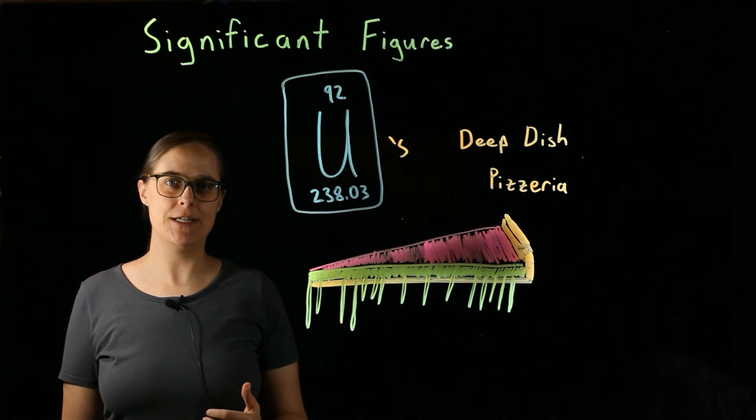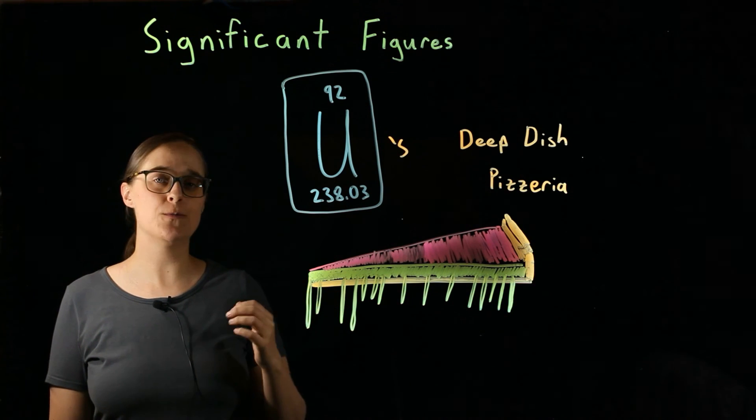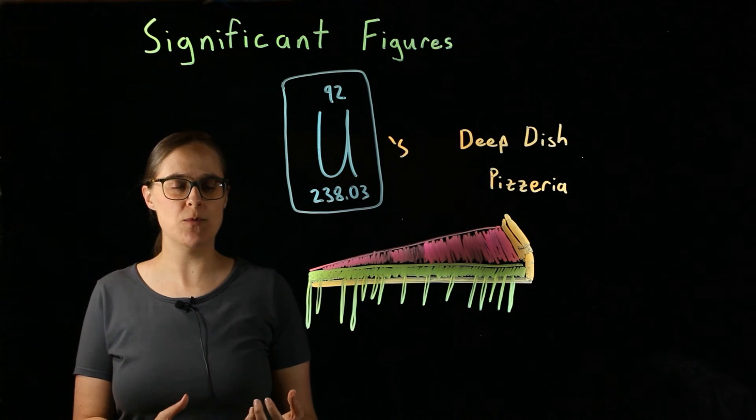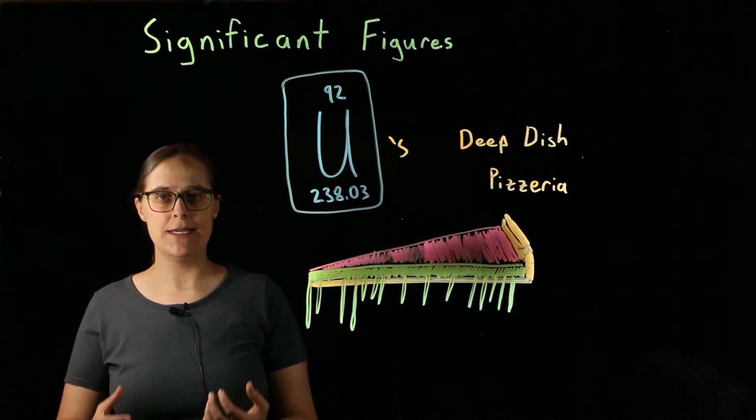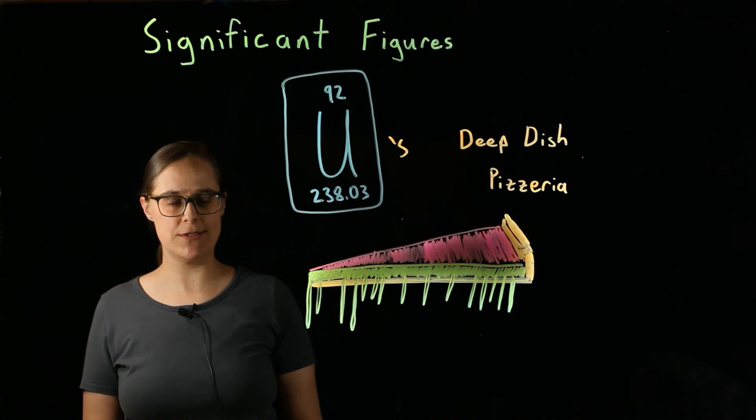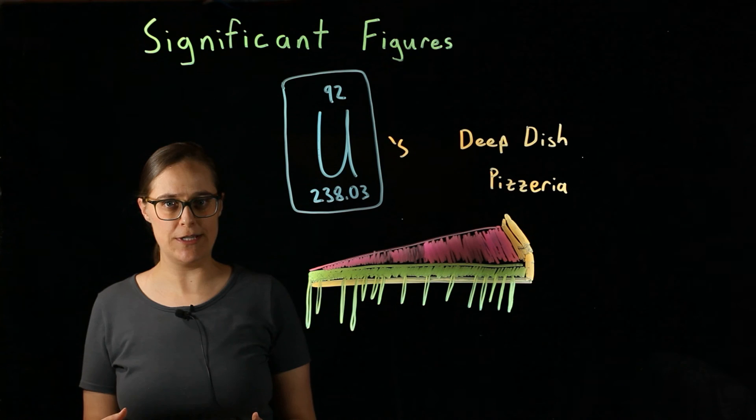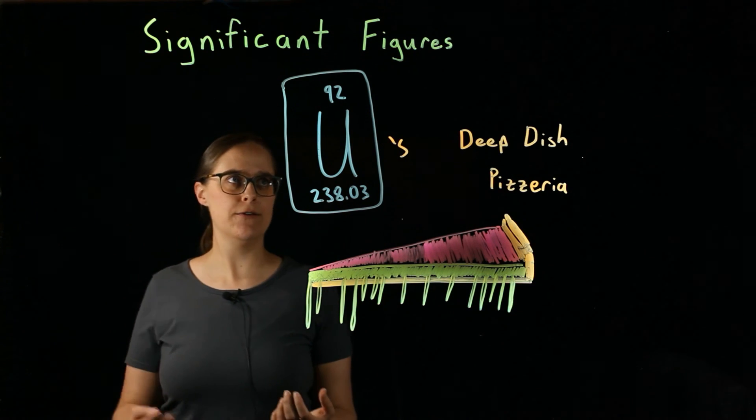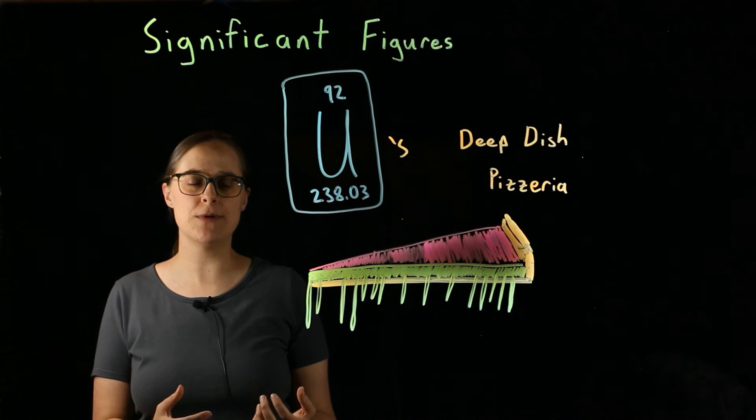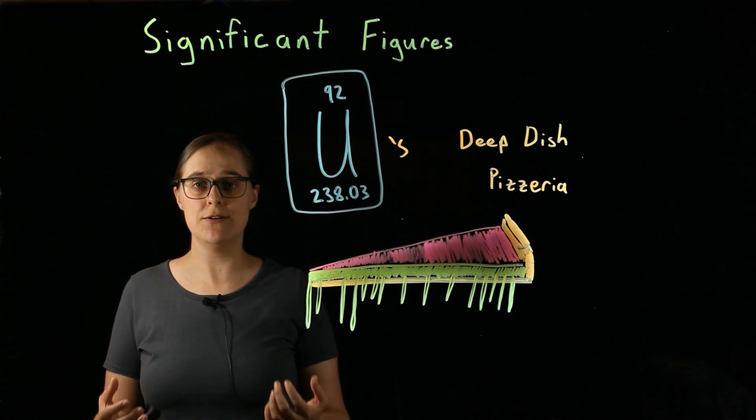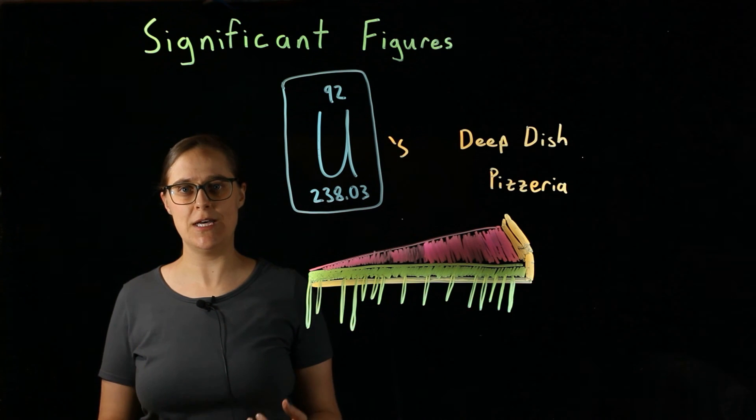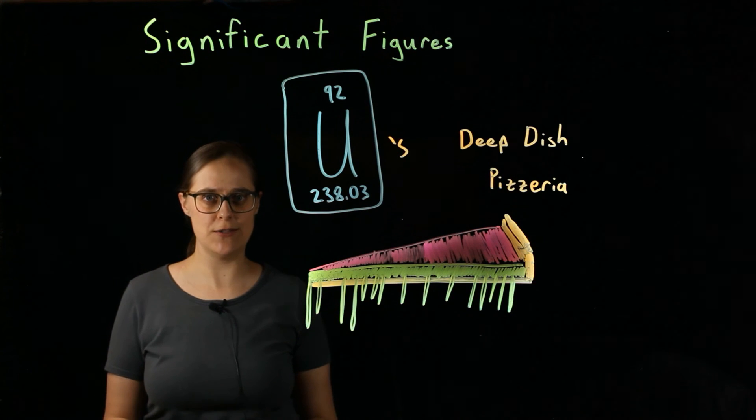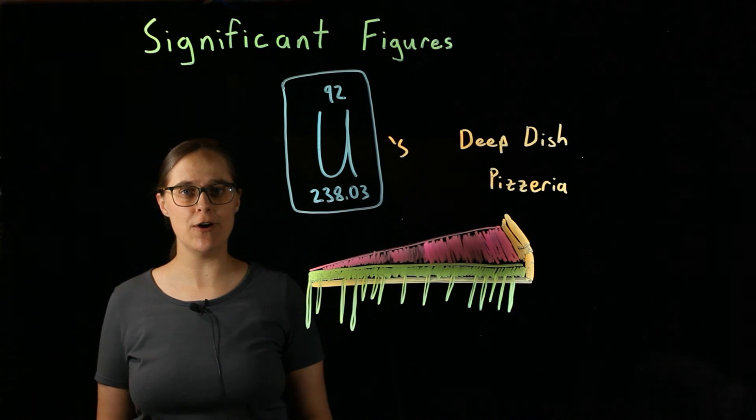Whenever you calculate a number, you need to make sure that you round the answer such that the answer that you're calculating does not have any more or less precision than the numbers you started with. There are a lot of rules about significant figures. There are going to be rules for calculations, multiplication and division, addition and subtraction, and logarithms. There are going to be rules for how to write numbers when you measure something in a lab. There are rules for how to recognize how many significant figures are in a certain number. I'm going to be doing lots of videos about significant figures covering all of those topics.